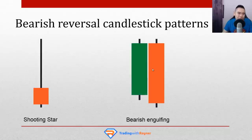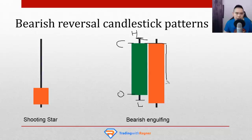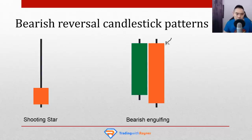There's also the bearish engulfing pattern — similar concept but using two candles. On the first day, buyers were in control and managed to close near the highs — they were really happy. The next day, sellers quickly took control at the opening price and drove the price down to close near the lows. This bearish candle is even more powerful because the body of the red candle is bigger than and engulfs the body of the previous bullish candle. That's why we call it a bearish engulfing pattern — this candle's body has engulfed and covered the body of the previous day's candle.